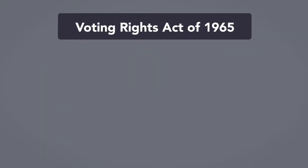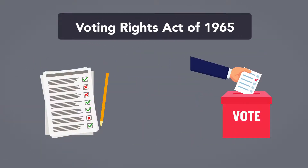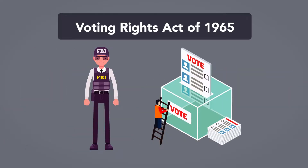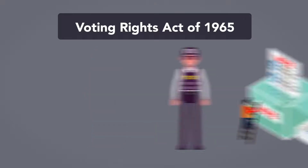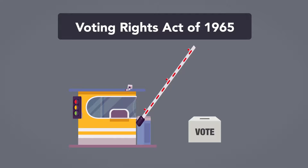Third, the Voting Rights Act of 1965 suspended the use of illiteracy tests as qualifications to vote, authorized the use of federal agents to supervise voter registration in states where such tests had been used and in states where fewer than half of eligible residents had registered to vote. The act also empowered the Attorney General to bring enforcement proceedings against the use of poll taxes, and imposed criminal penalties for violation of the act.